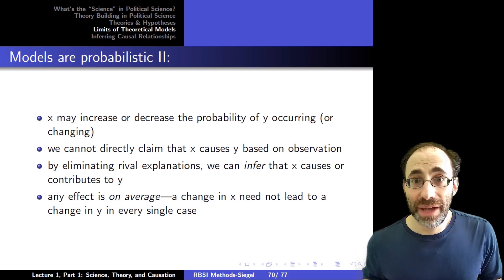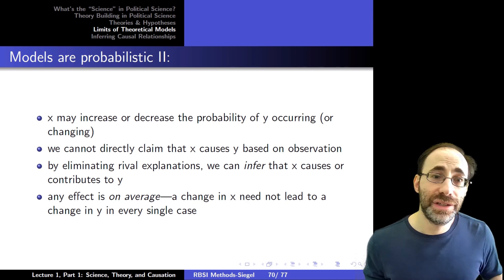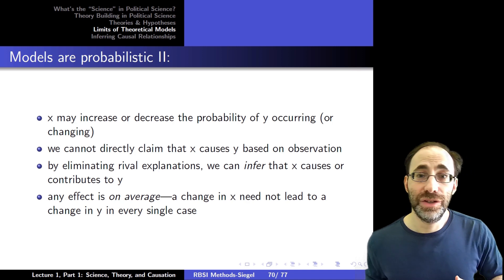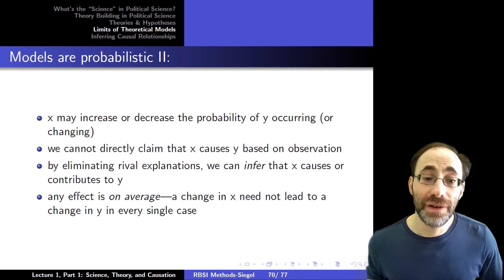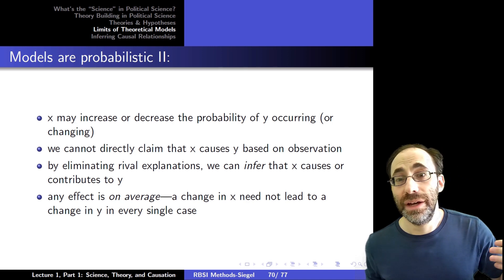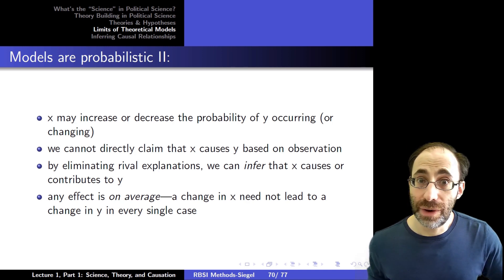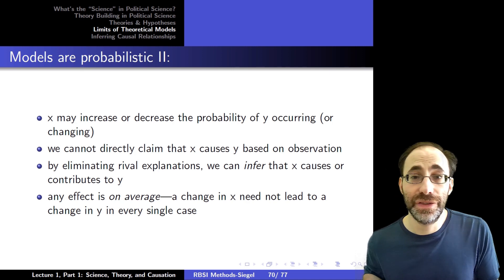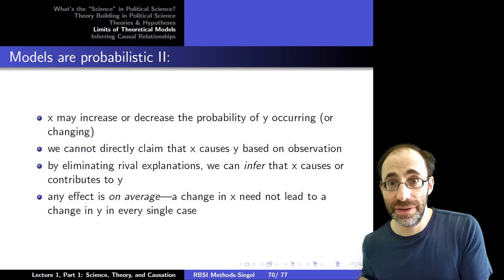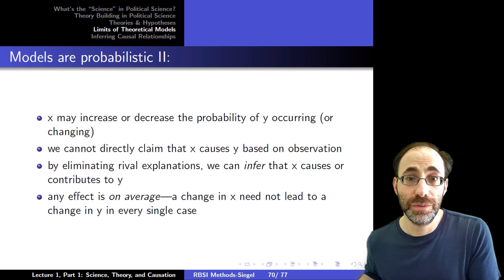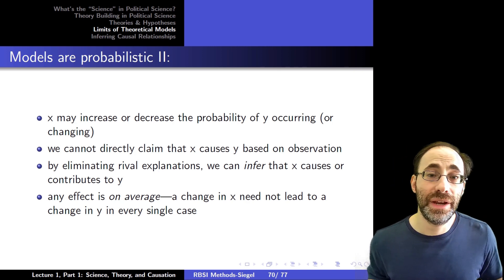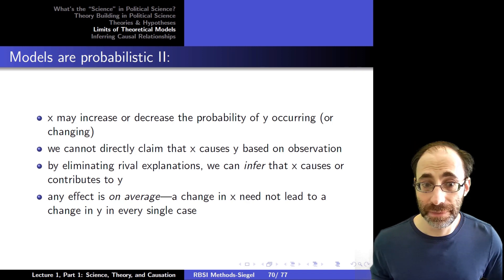All we're going to see is average behavior. On average, does increasing x increase y? And our goal will be to try to use these average behaviors we identify to eliminate rival explanations to our theory and provide support for our theory that x causes or contributes to y. So we infer that this relationship exists by reducing and eliminating rival explanations like the null hypothesis.